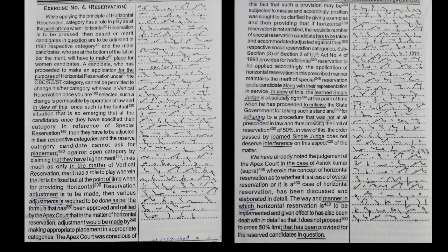Accordingly, the position was clarified by giving examples and providing that if horizontal reservation is not satisfied, the requisite number of special reservation candidates has to be accommodated against their respective social reservation categories. Subsection 3 of Section 3 of UP Act Number 4 of 1993 provides for horizontal reservation to be applied accordingly. This prescribed manner maintains the merit of special reservation quota candidates along with their representation in service.